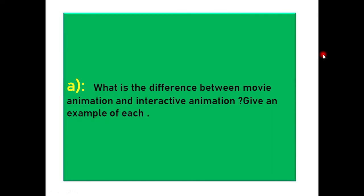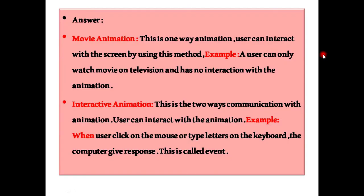What is the difference between movie animation and interactive animation? Give an example of each. Answer: Movie animation - This is one way animation. User can interact with the screen by using this method. Example: A user can only watch movie on television and has no interaction with the animation.